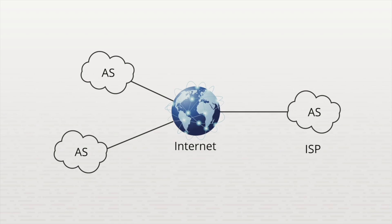The routing protocol scope identifies boundaries where routing information is shared. An Interior Gateway Protocol, or IGP, is a routing protocol that is used within an autonomous system. So within your private network, you would run a routing protocol to share internal routes. This is an Interior Gateway Protocol.